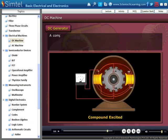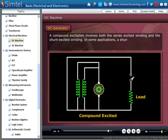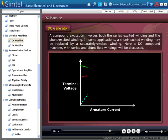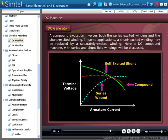Now compound excitation involves both the series excited winding and the shunt excited winding. In some applications, a shunt excited winding may be replaced by a separately excited winding. Here, a DC compound machine with series and shunt field windings will be discussed.